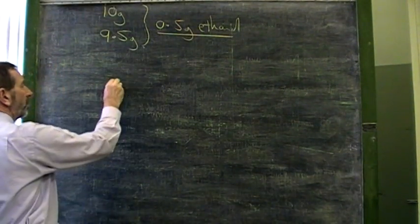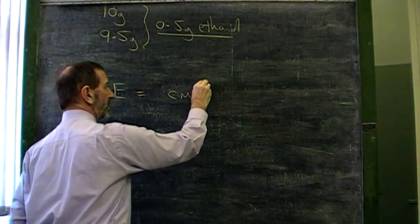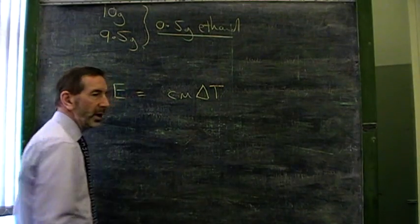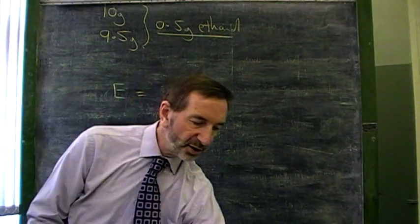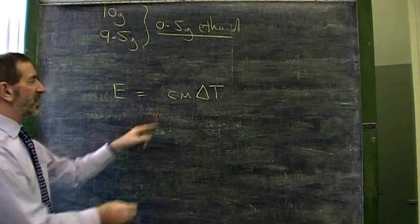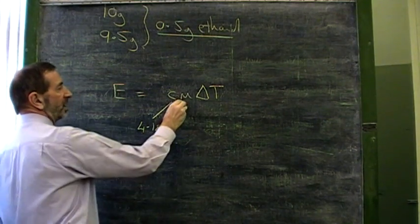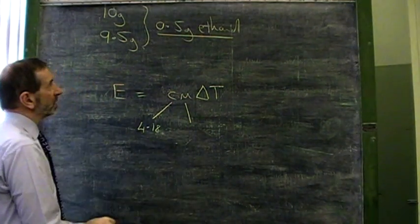Oh yes, we use a formula, and the formula says that the energy produced can be calculated if we know three values. Now the important point here is that these three values all refer to the water. This is the specific heat of the water, the number we must use because it's water we're heating. This is the mass of water.